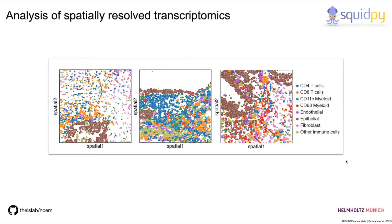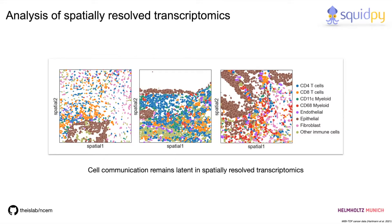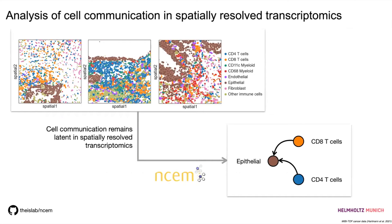From just looking at these images you might conclude that there's an interaction between T cells and cancer cells. However, it's still difficult to assess how strong this communication is — whether there is indeed an impact on gene expression variation if you have these cell types close by, or if they are just randomly allocated. These interactions are still latent in your observations, and you need specific tools to analyze if there is an enrichment of these communication events.